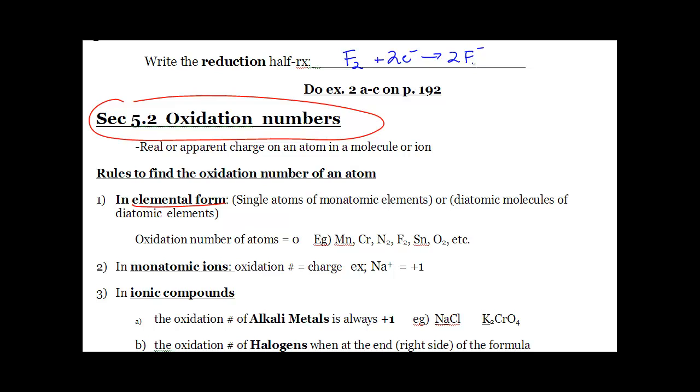First off, here's the easy one. If there's no charge given, you can just assume that it's a zero. Straight up, don't make it any harder than it needs to be. If you're neutral, if you're a single atom, a single metal, and there's no charge given, it's a zero. Easy.